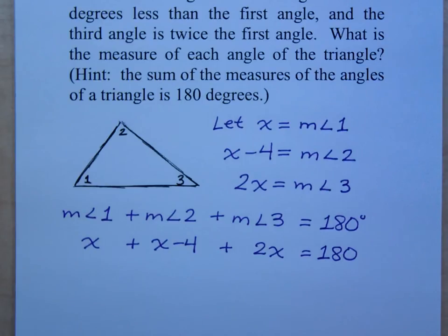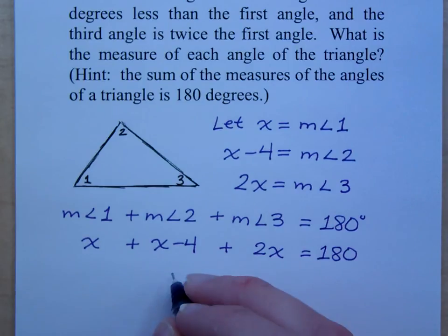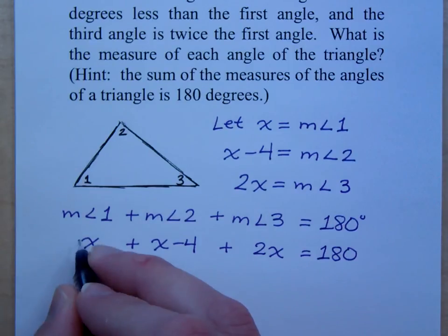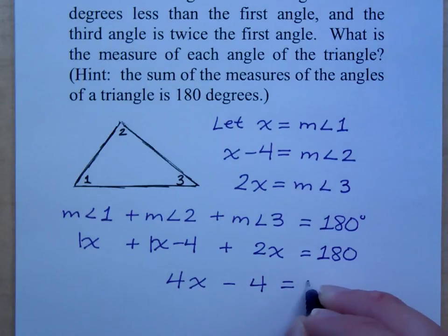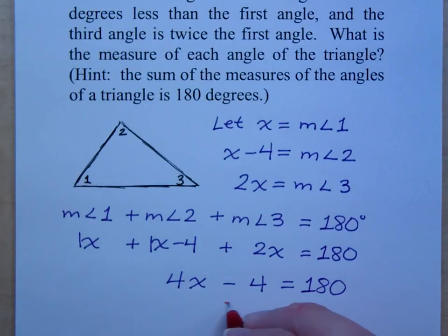So, what do I do here? Yeah, go ahead and combine like terms, Dennis. What do you have? Yep. You've got one plus one plus two, so that's four x minus four equals 180. So, we combine like terms, the problem looks smaller. We then do what? Add four. Add four, and the problem is going to look even smaller after that.